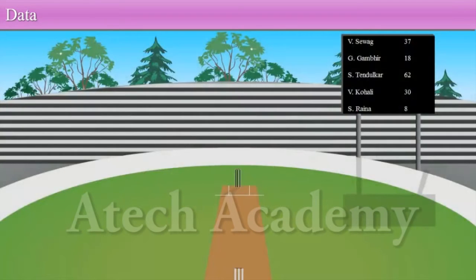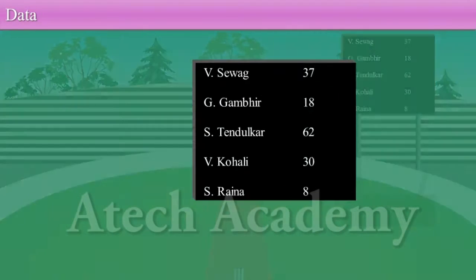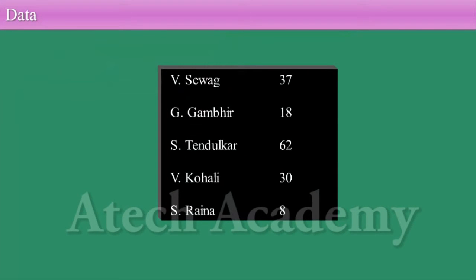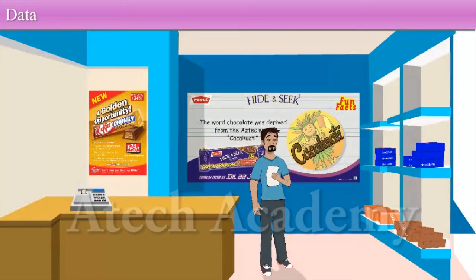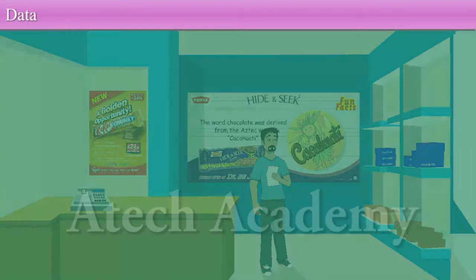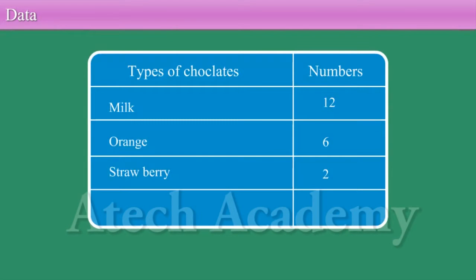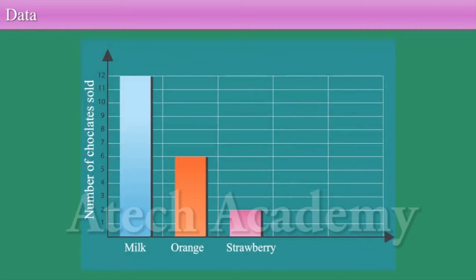A good example of data is the runs scored by a batsman in a cricket match. Another example of data is the record kept by a shopkeeper of how many numbers of an item are available in his shop, which is called inventory. Visual representation of the data will help us to understand data better and remember the facts easily.